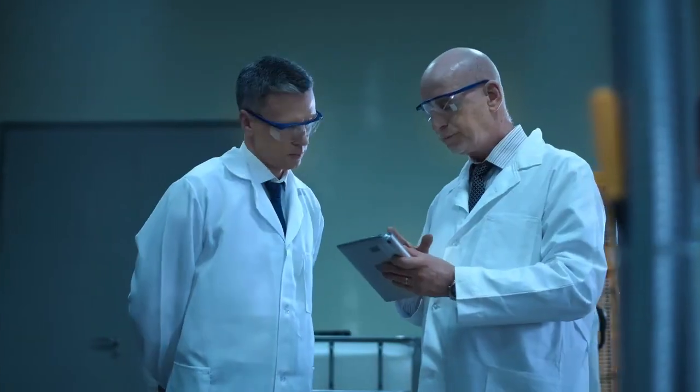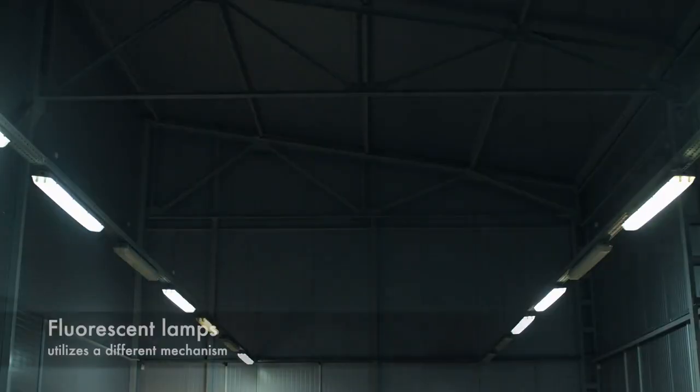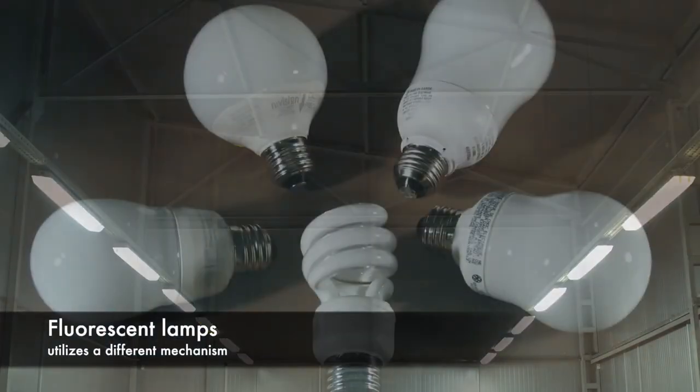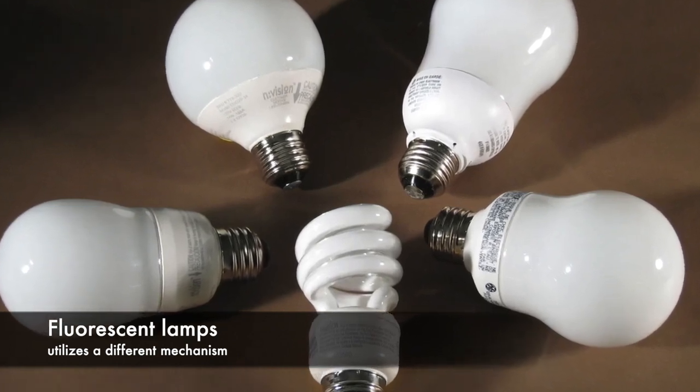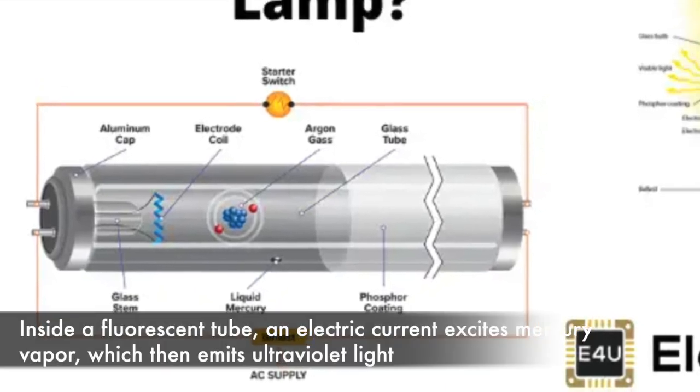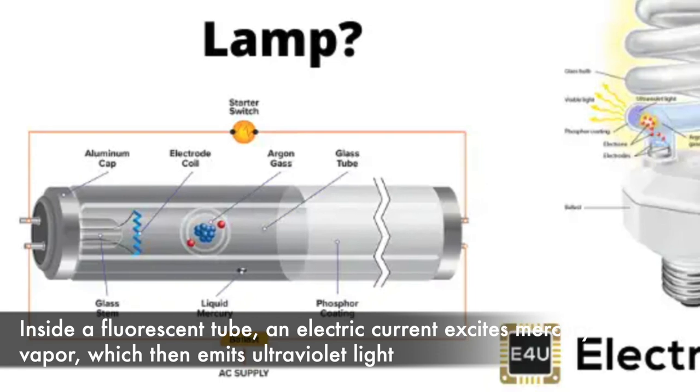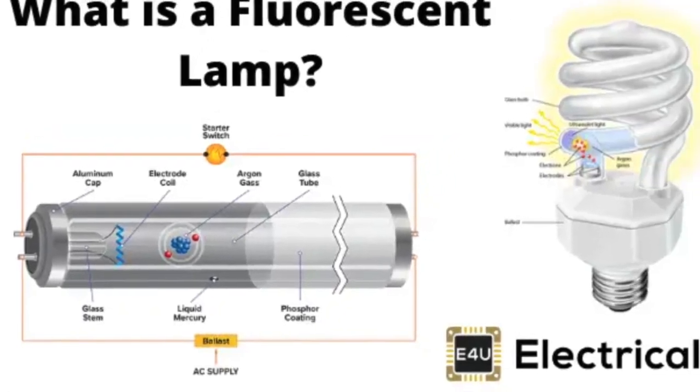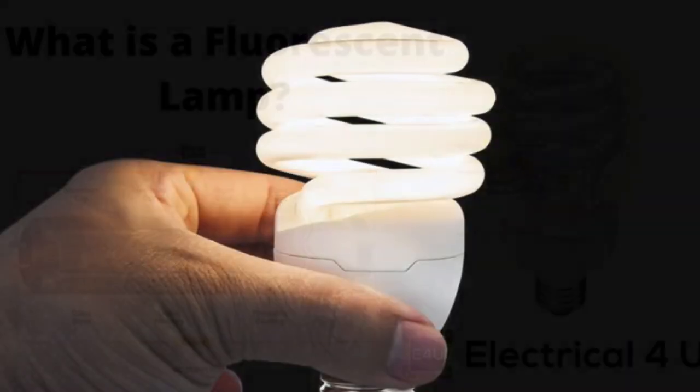At the same time, researchers were exploring alternative lighting technologies, such as fluorescent lamps. Unlike incandescent bulbs, which rely on heating a filament to produce light, fluorescent lamps utilize a different mechanism. Inside a fluorescent tube, an electric current excites mercury vapor, which then emits ultraviolet light. This ultraviolet light interacts with phosphors coating the inside of the tube, causing them to fluoresce and produce visible light.